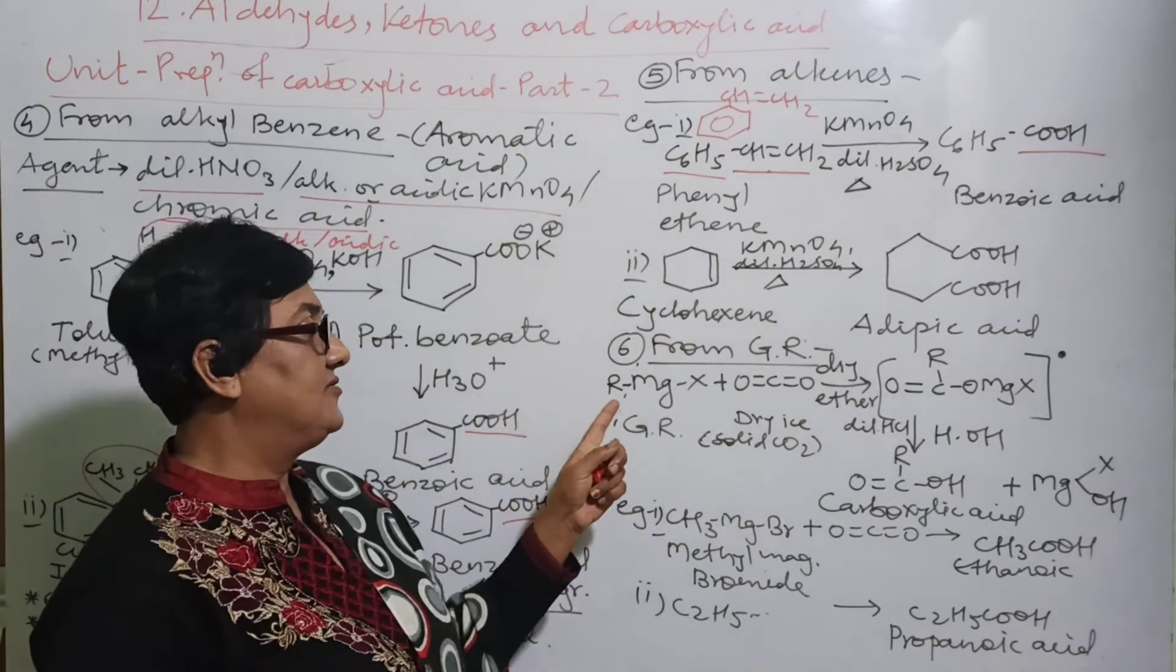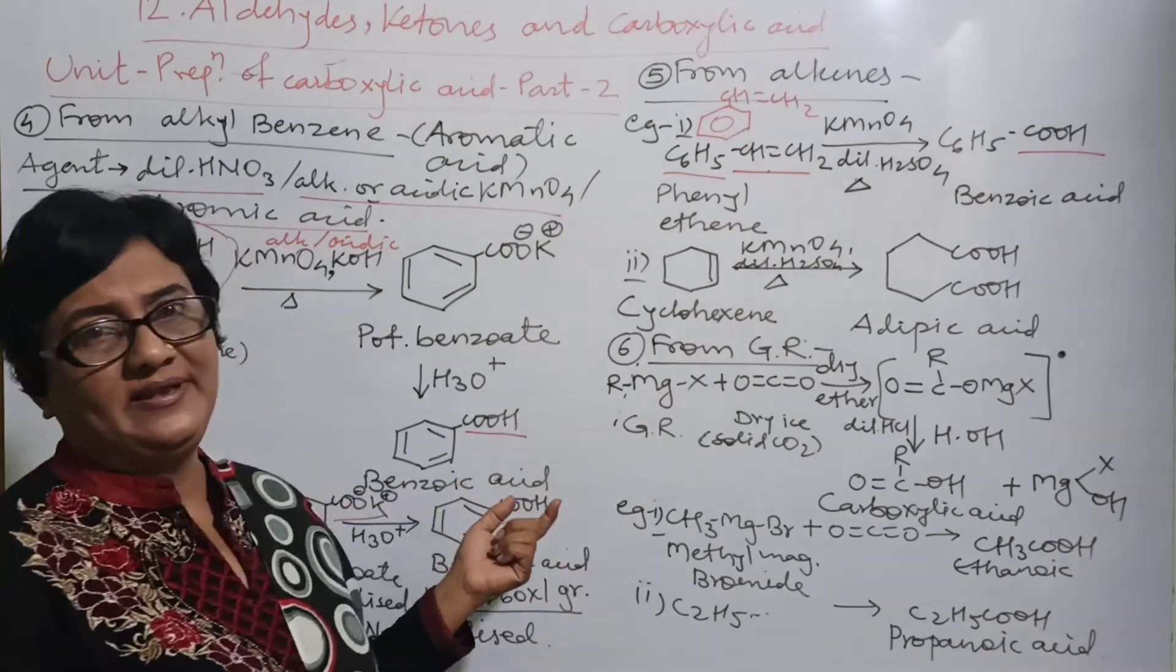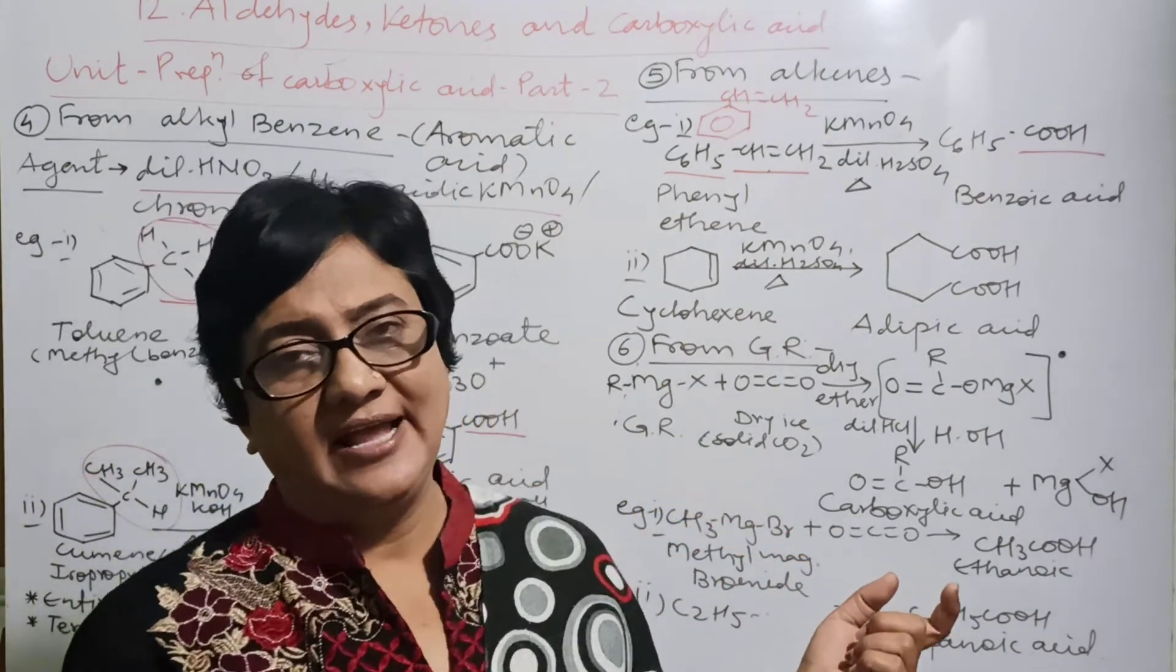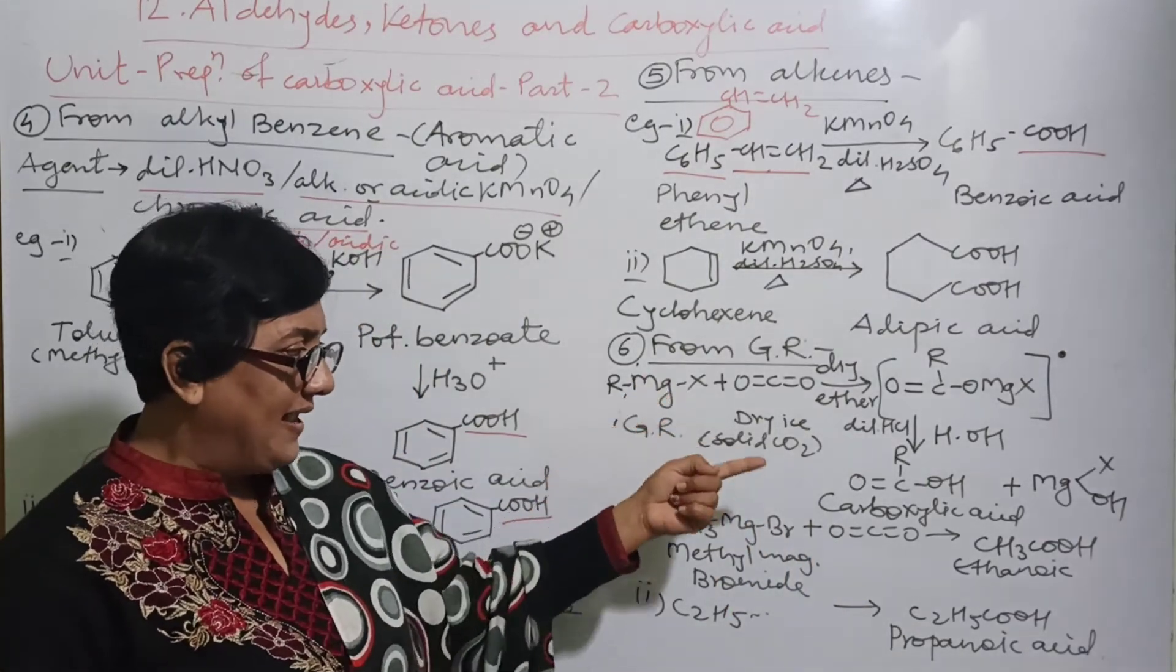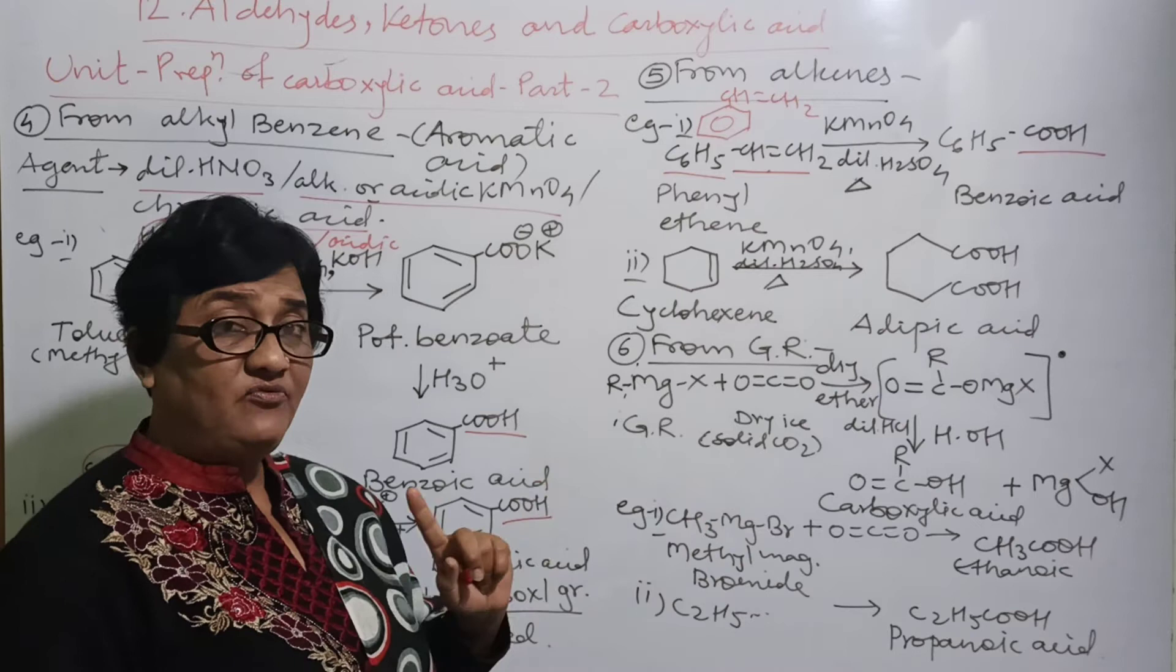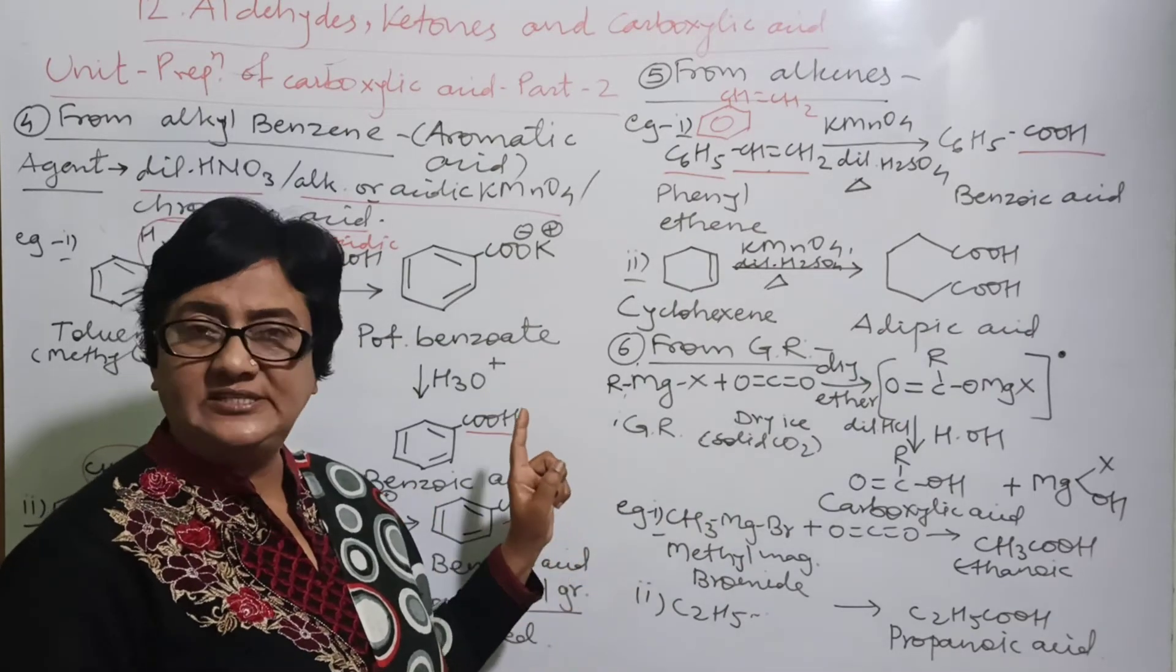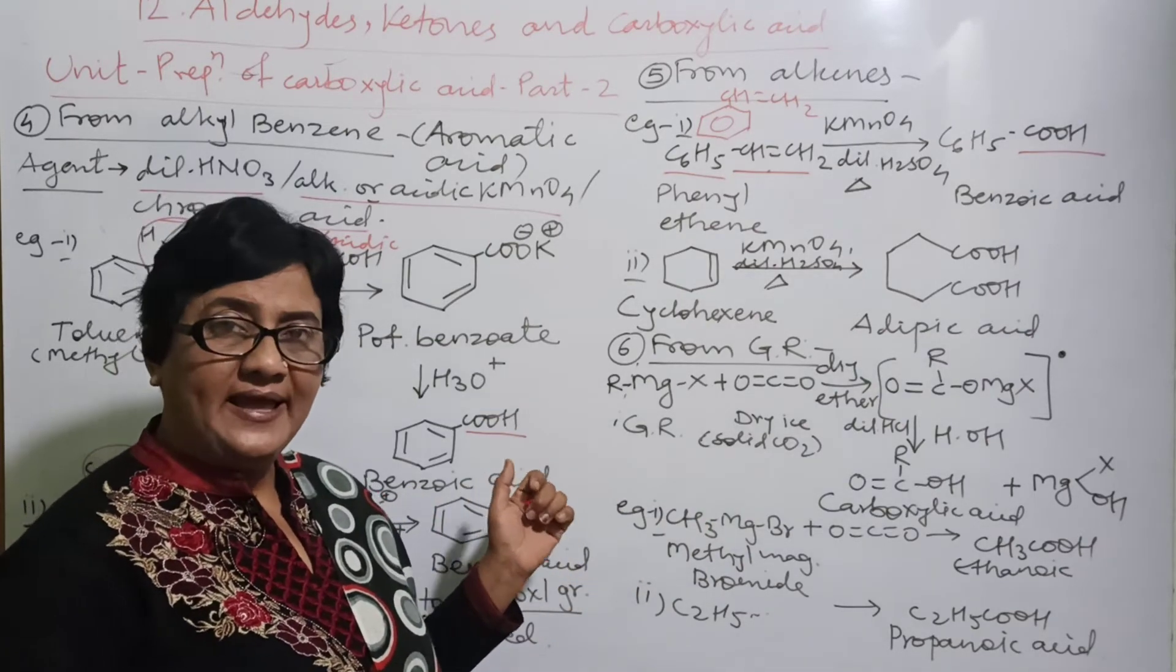So the sixth one is from Grignard reagent. You are familiar with Grignard reagent. What is Grignard reagent? Alkyl magnesium halide. So R-MgX. Here mechanism is shown. The way of mechanism is always same for Grignard reagent.